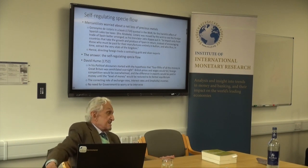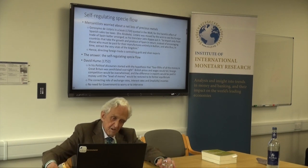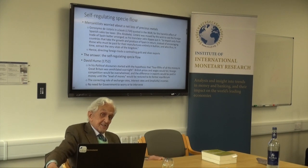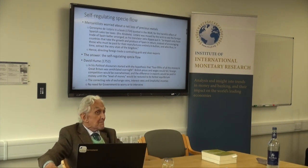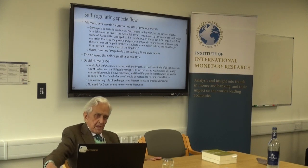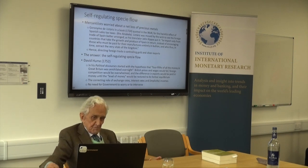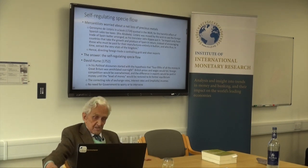The locus classicus for the self-regulated specie flow is David Hume's 1752 Political Discourses. He assumed that four-fifths of all the money in Great Britain was annihilated overnight, then traced what would happen to gold circulation. He said: as soon as so much money is destroyed, British prices and wages would fall, foreign competition would be overwhelmed, and the surplus of exports would be paid in money until the level of money was restored to its former equilibrium. There was no need for government to intervene.